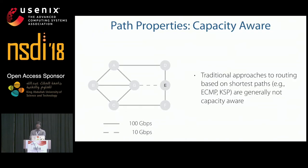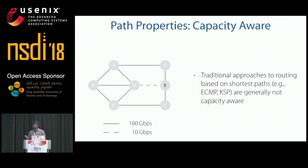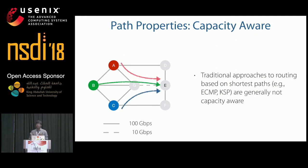Let's look at capacity-awareness and why it is needed. Consider an example topology where each link has 100 Gbps capacity except link G2E, shown as a dotted line, which has only 10 Gbps. With link weights proportional to depicted lengths, using shortest-path-based schemes such as ECMP or k-shortest paths, when nodes A, B, and C want to send traffic to E, all shortest paths end up using the same low-capacity link G, leading to high congestion even though spare capacity exists elsewhere in the network.